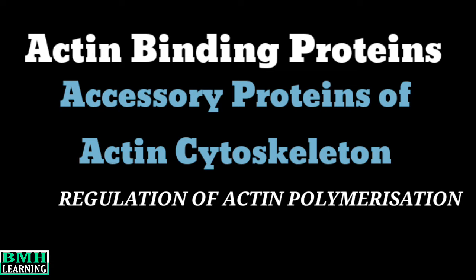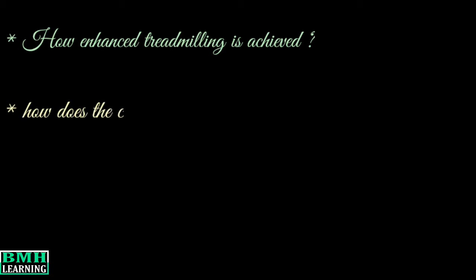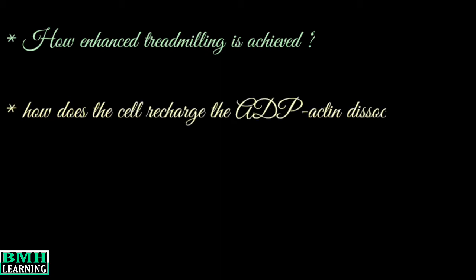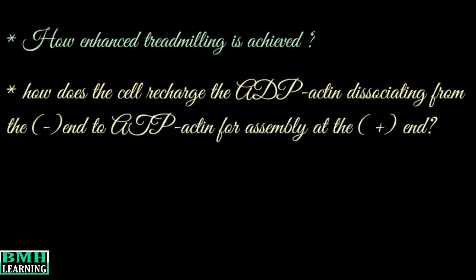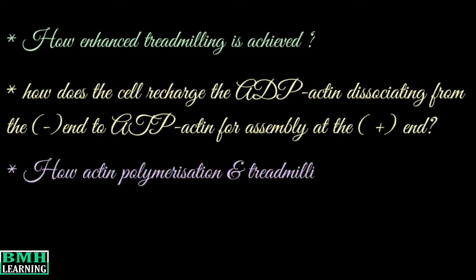Till now we have studied the idea of actin polymerization and actin treadmilling, but the last video left us with a few very important questions: how is enhanced treadmilling achieved, how does the cell recharge the ADP-actin dissociating from the minus end to ATP-actin for assembly at the plus end, and also how actin polymerization and treadmilling is stopped, because it cannot be constitutively — meaning continuously — operated.